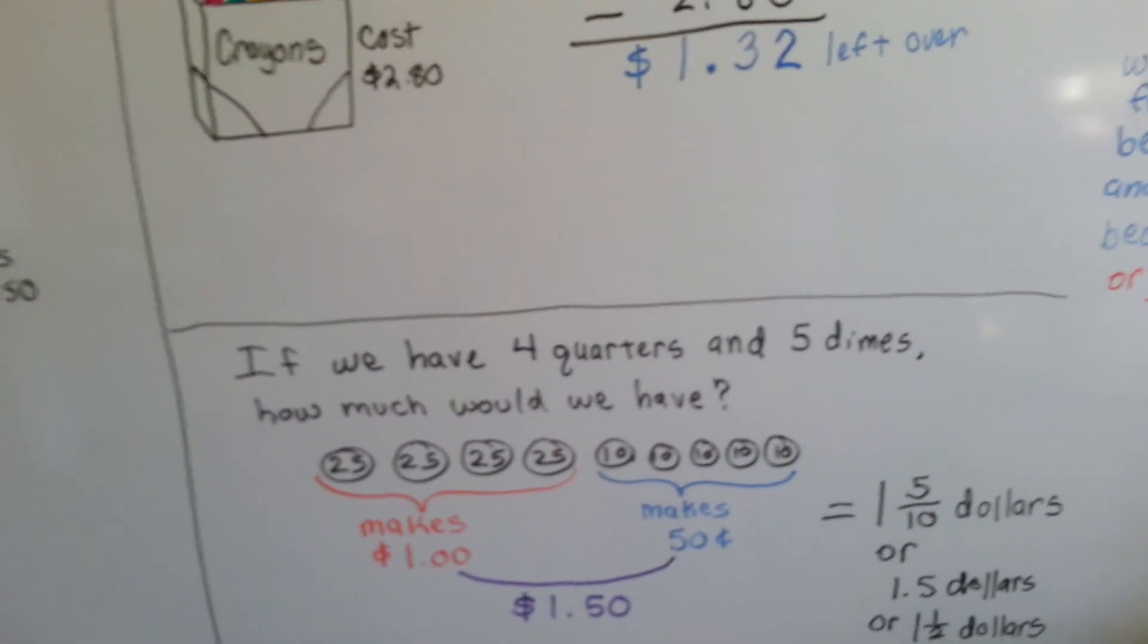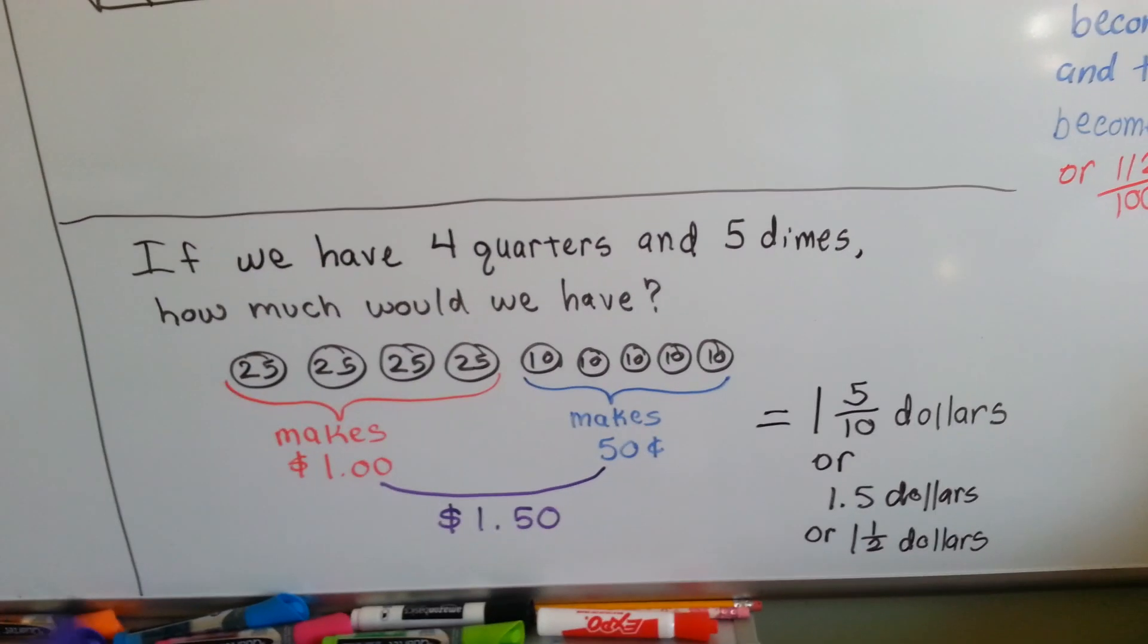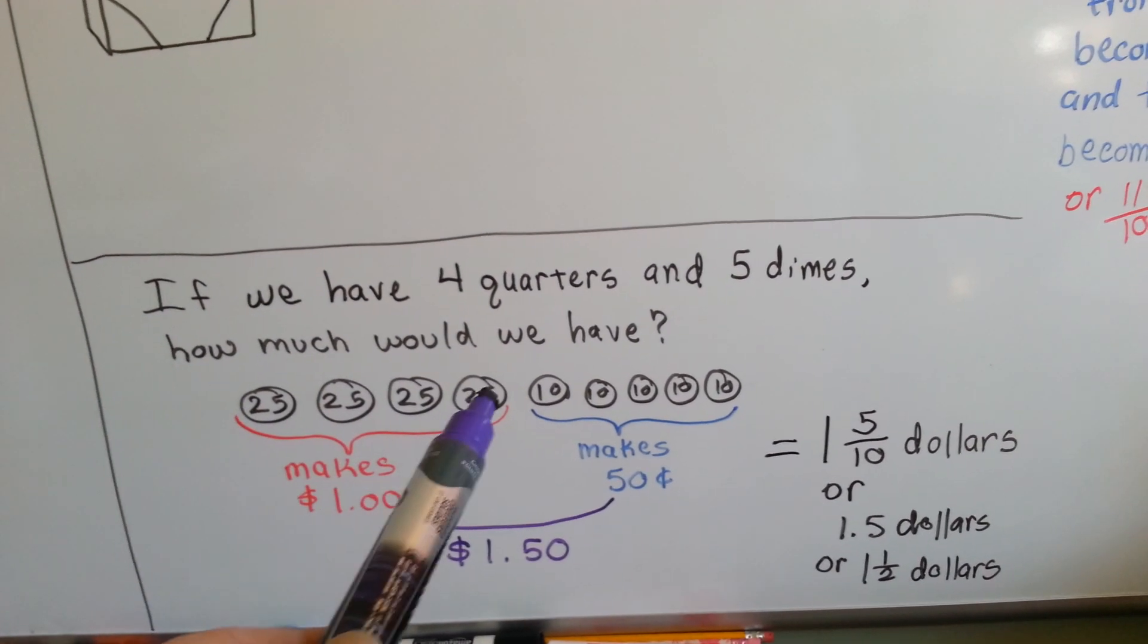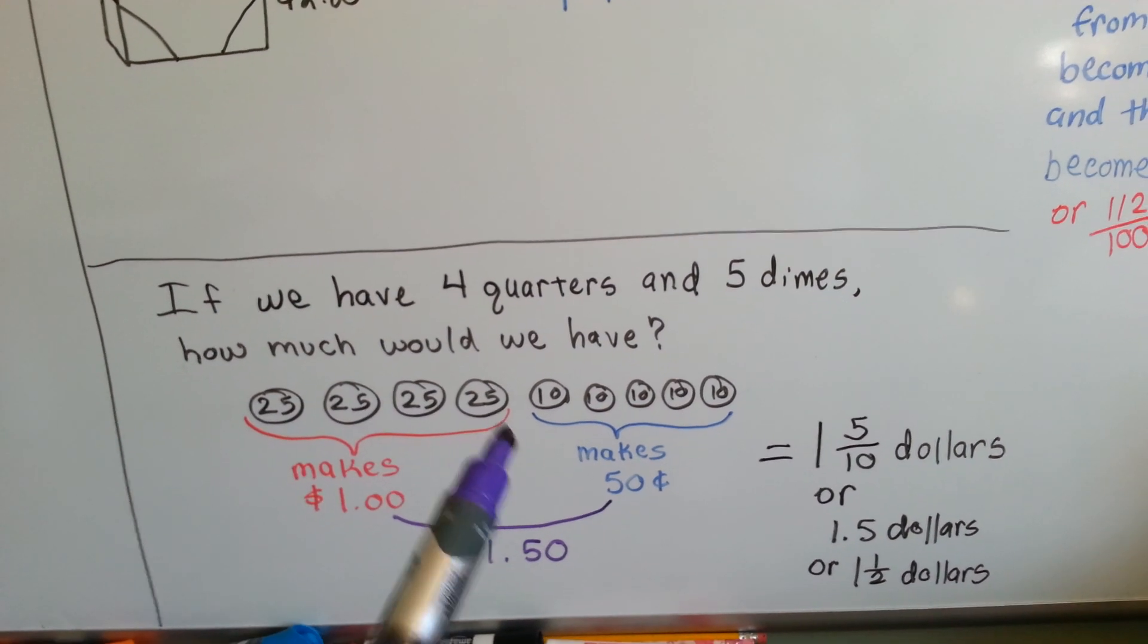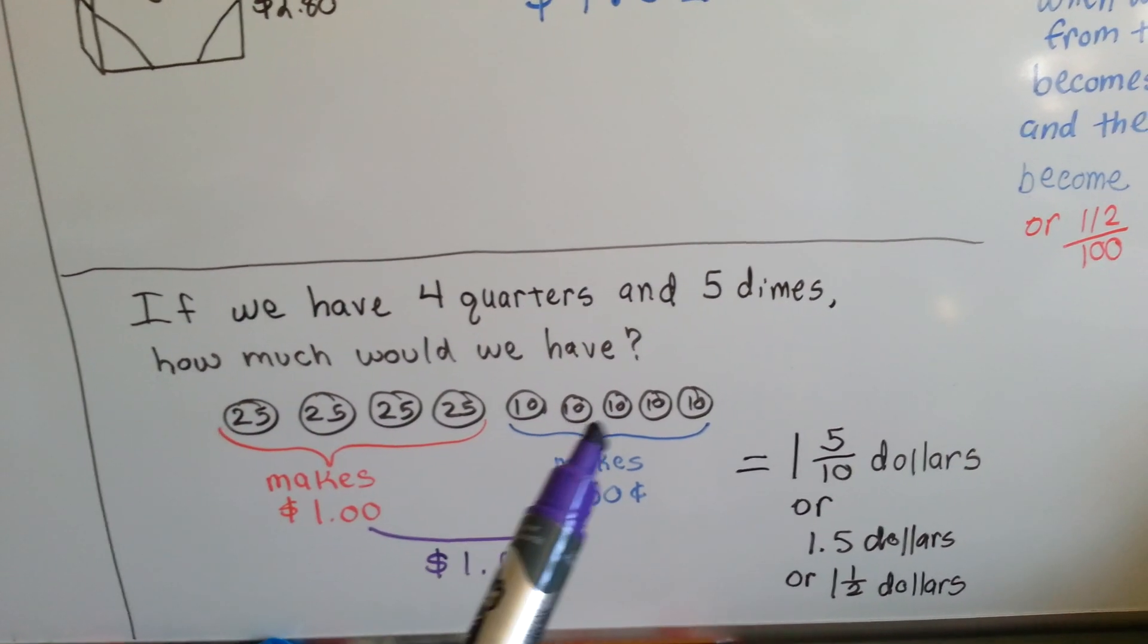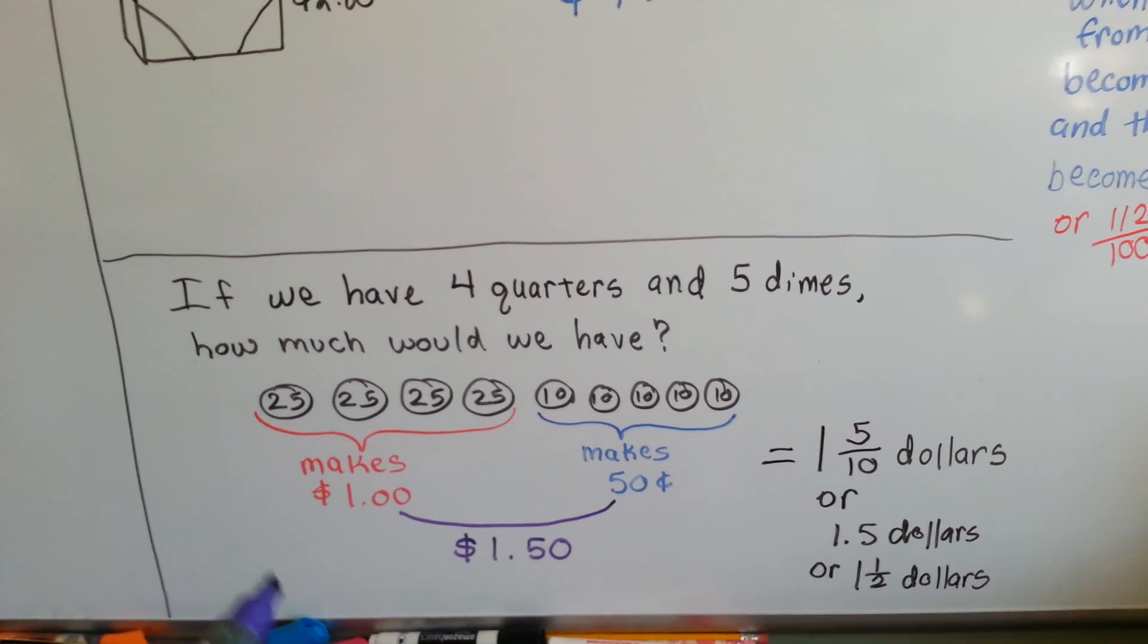If we have four quarters and five dimes, how much would we have? Well, remember, four quarters makes one dollar. Five dimes, that's easy. Ten, twenty, thirty, forty, fifty. We'd have a dollar fifty.